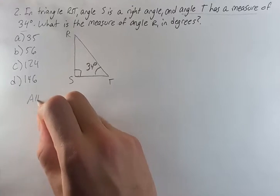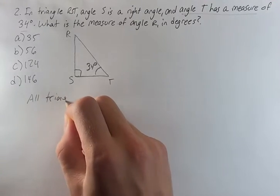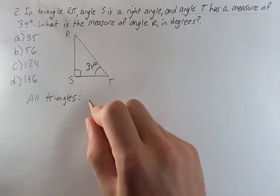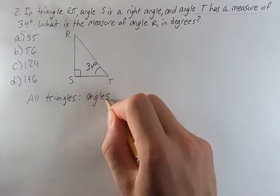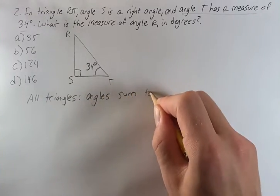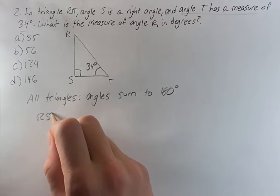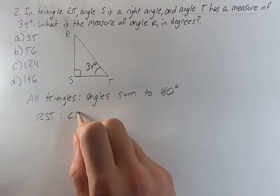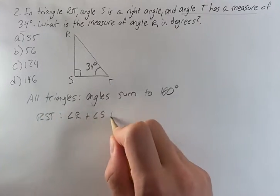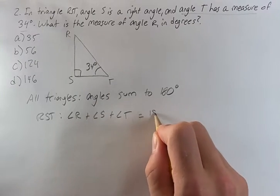And we can also use the fact that for all triangles the angles sum to 180 degrees. So for RST that means that angle R plus angle S plus angle T equals 180 degrees.